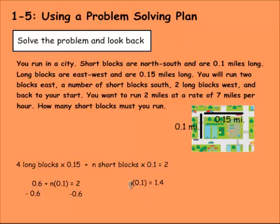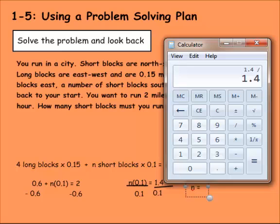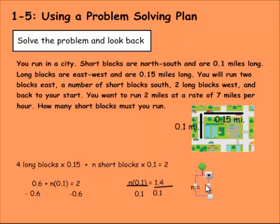Now we have n being multiplied times 0.1. So what's the opposite of multiplying n times 0.1? That would be dividing by 0.1. So 0.1 will be divided down here. Then we also need to divide by 0.1 across the equal sign as well. So we're left with n, which is the number of short blocks, equals 1.4 divided by 0.1. That equals 14. So n equals 14.